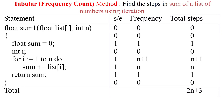Here we will apply the tabular method for the frequency count approach to find out the number of steps for a given algorithm, which finds the sum of a given list of numbers. We are passing values to the function and taking a table. This table indicates the number of steps for execution, the frequency — that is, how many times each statement executes — and the total number of times it is executing.